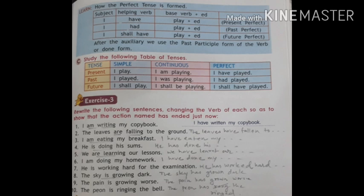Exercise 3: rewrite the following sentences changing the verb of each so that the action named has ended just now. The first one is done: 'I am writing my copy book' becomes 'I have written my copy book.' Second: 'The leaves are falling to the ground' becomes 'The leaves have fallen to the ground.' Number three: 'I am eating my breakfast' becomes 'I have eaten my breakfast.' Four: 'He is doing his sum' becomes 'He has done his sums.'